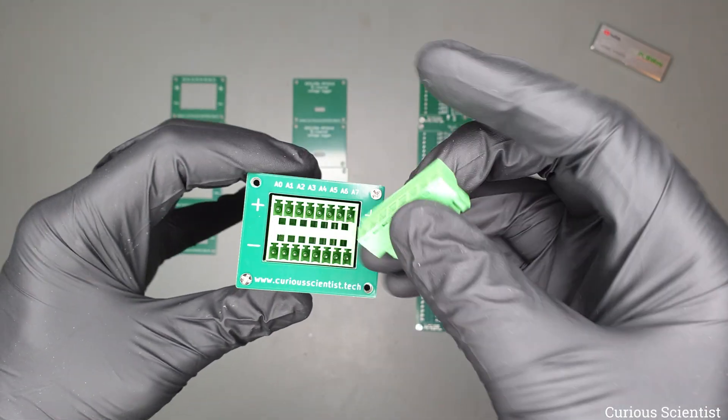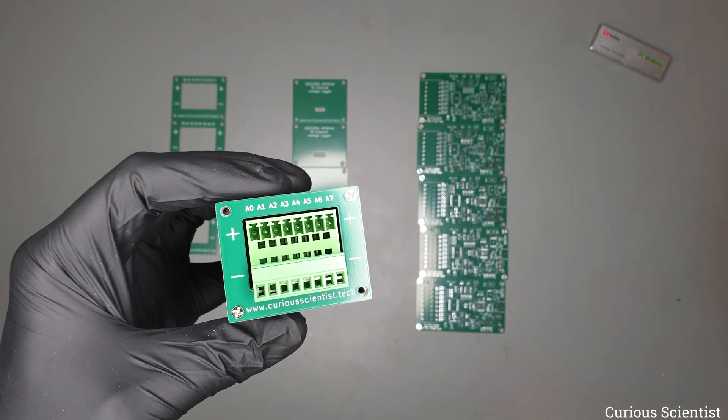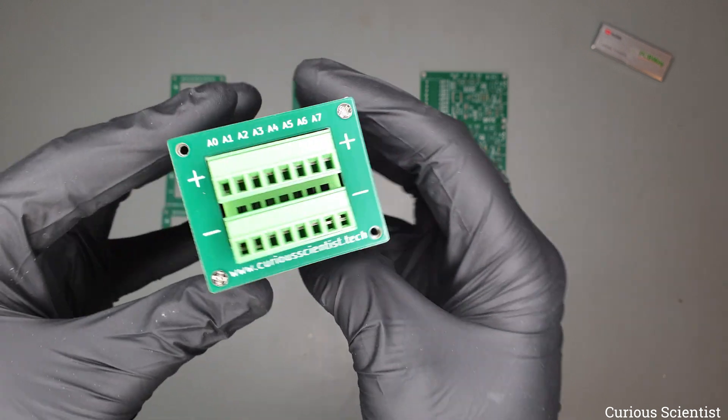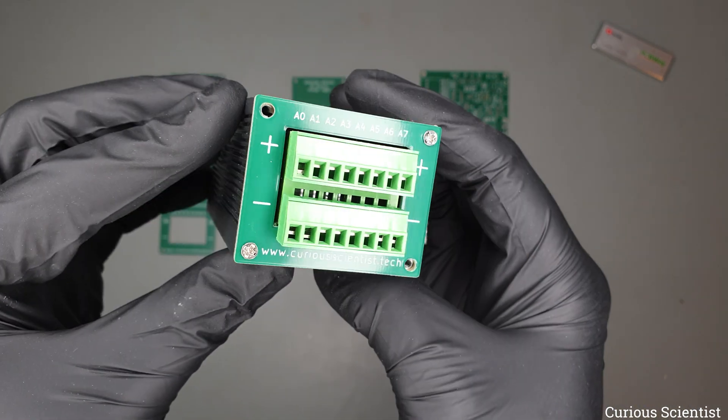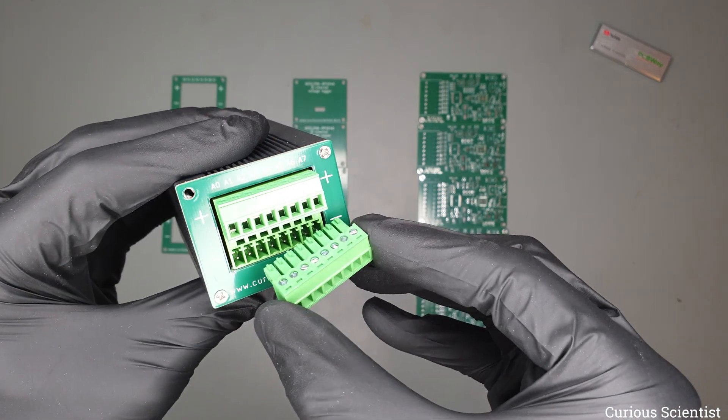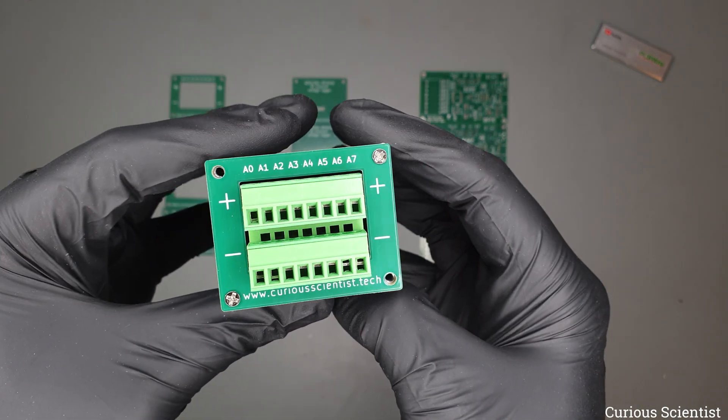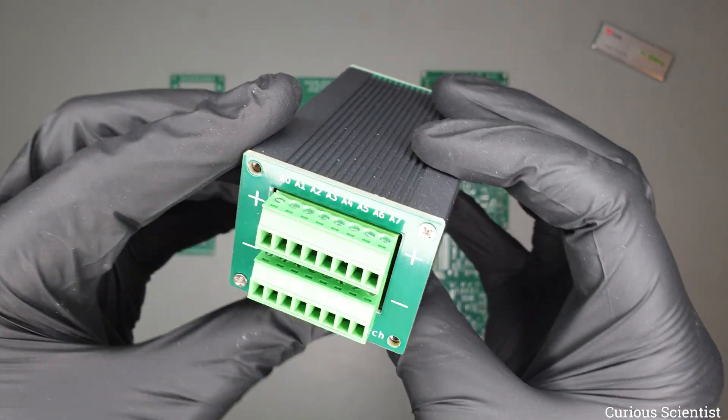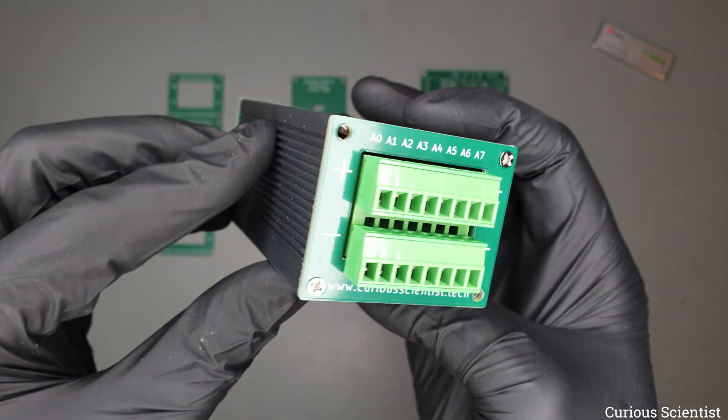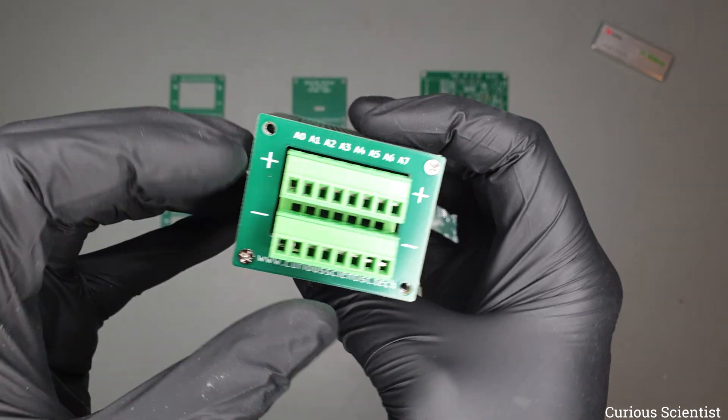We can install these screw terminals as well just to see how they go together. Now this is our rear panel and you can see that it looks quite nice. We can see the channels there, so A0 is here and A7 is on the other side. This is the positive row and this is the negative row.